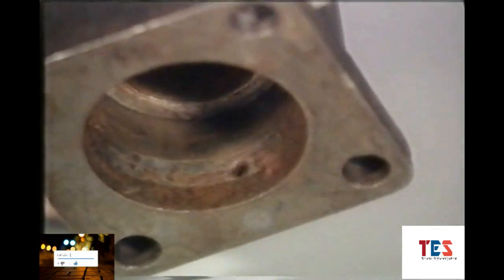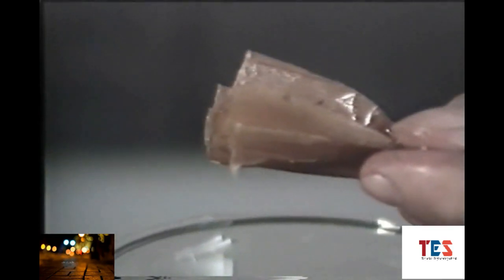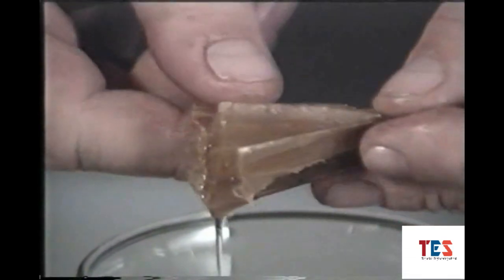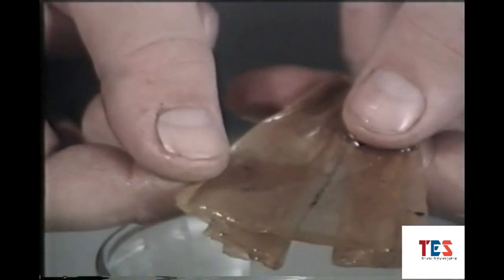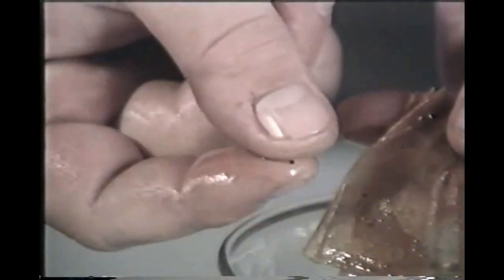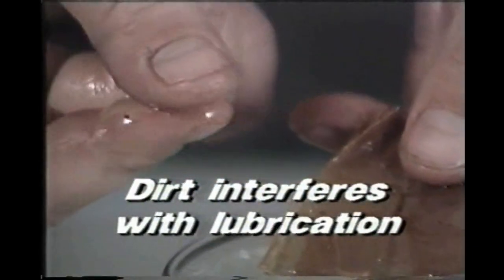Rust is not the only source of contamination in a fluid. Dirt is often responsible for much of the damage to components in a hydraulic system. Dirt interferes with the transmission of hydraulic energy by plugging orifices, and it reduces the ability of hydraulic fluid to release heat. The most significant problem, however, is that dirt interferes with lubrication.